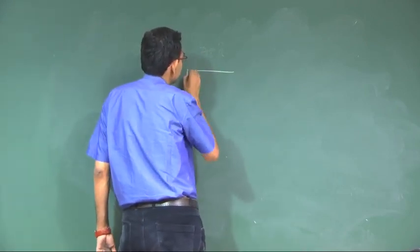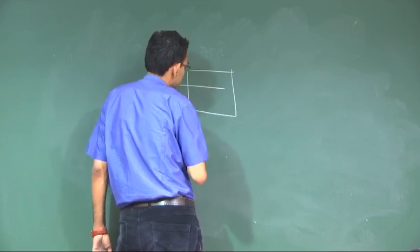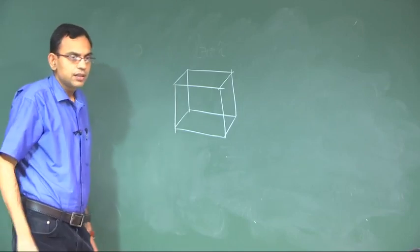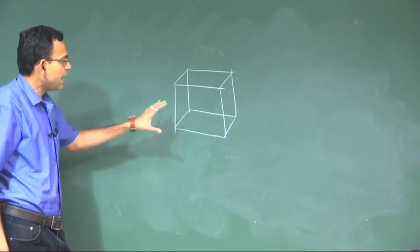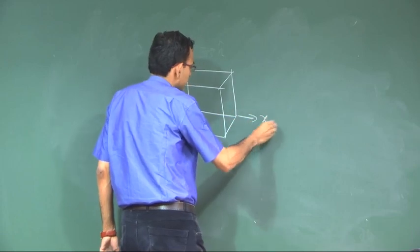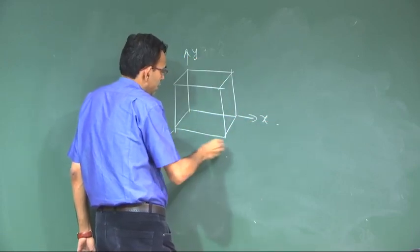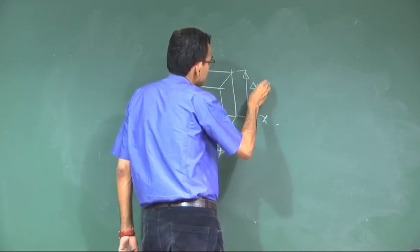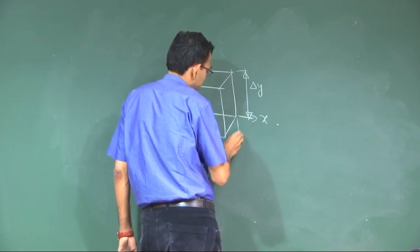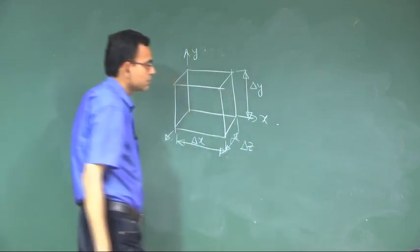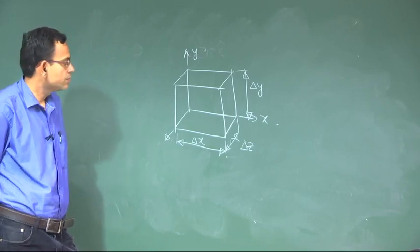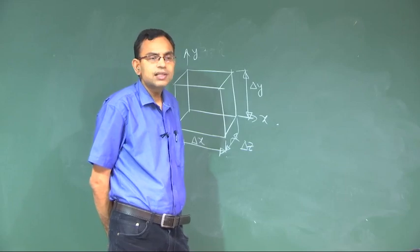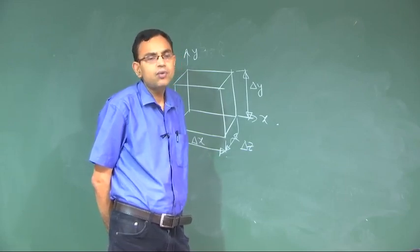With that understanding, let us assume that you have a rectangular volume with dimensions delta x, delta y, and delta z. We will try to individually calculate the change in delta x, the change in delta y, the change in delta z, and accordingly what is the change in volume of the fluid element.